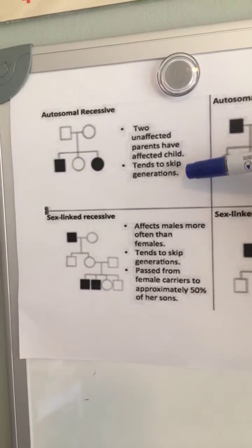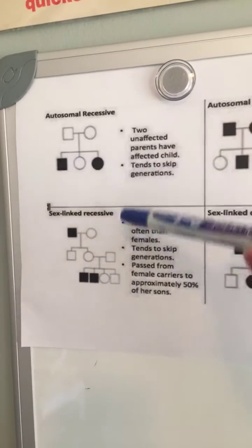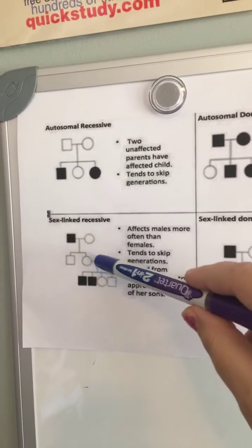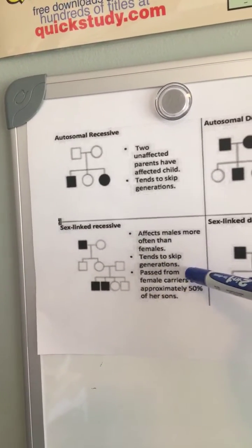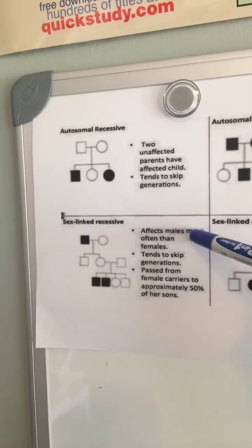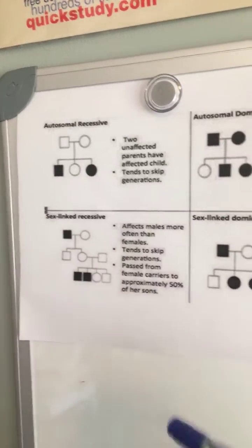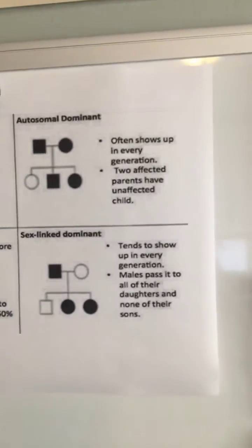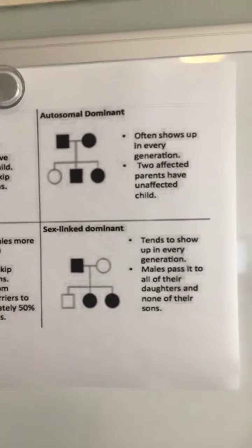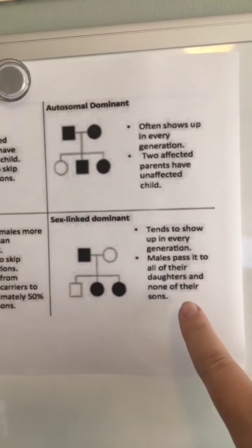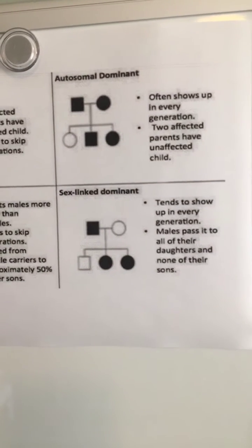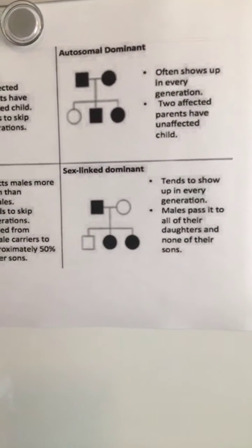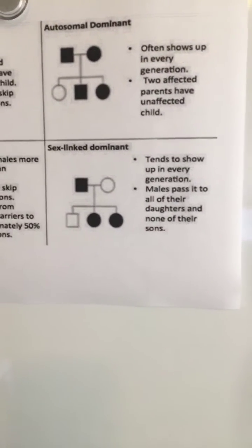Sex-linked recessive is also going to skip a generation, it's going to affect males more than females, and females can also be carriers. Dominance shows up every generation — two affected parents have an affected child. Sex-linked dominant tends to show up in every generation, and males pass it on to their daughters and none of their sons.